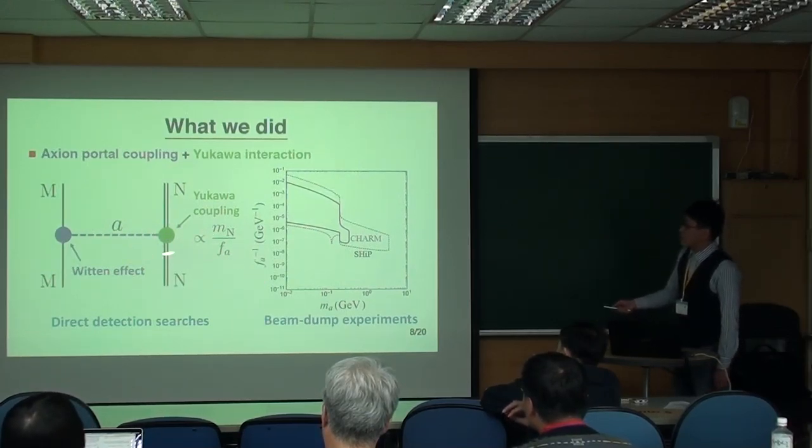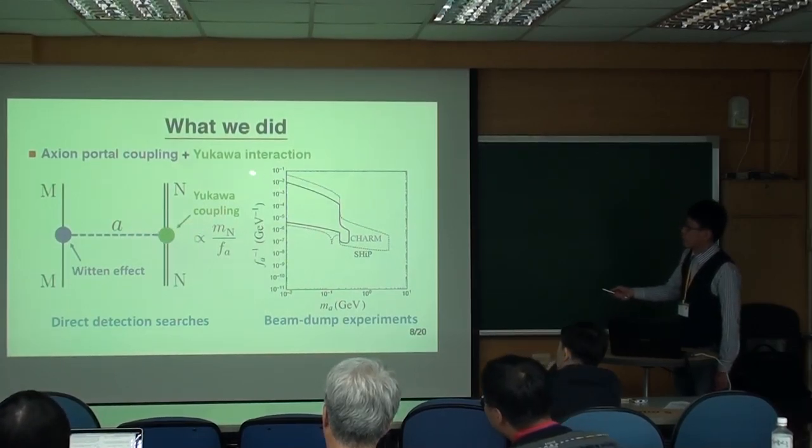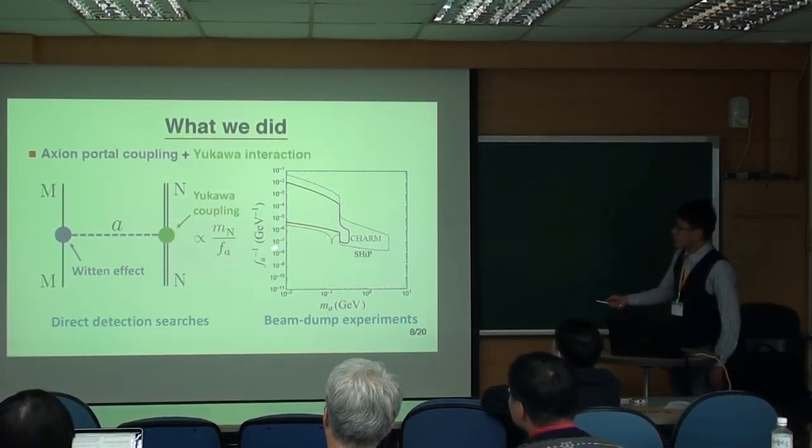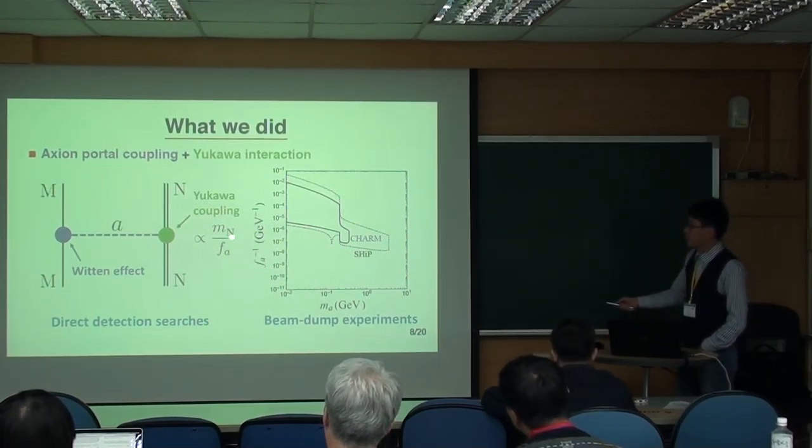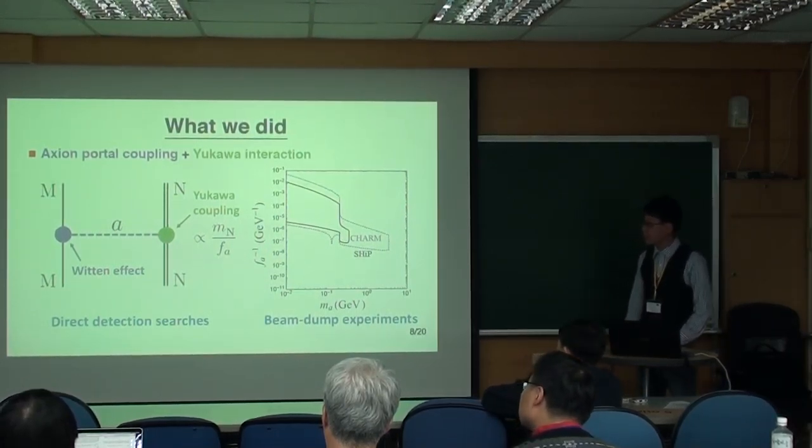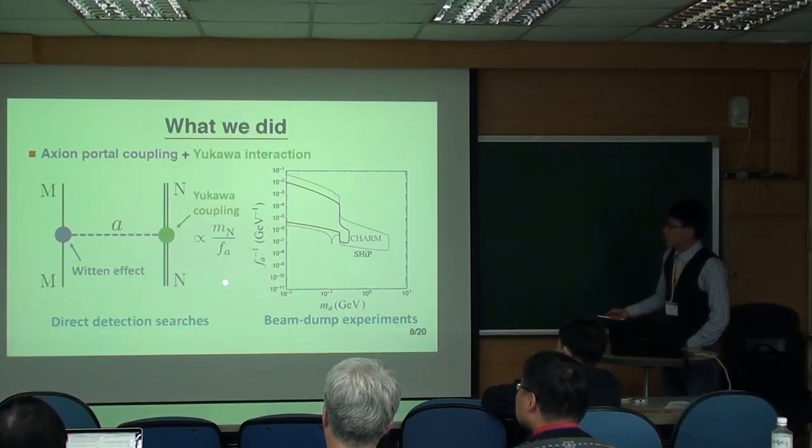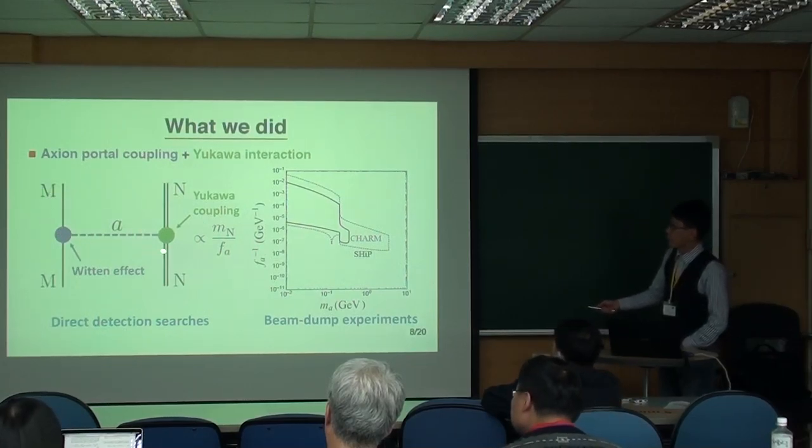The interaction of the axion with the monopole is not as easy. Basically, we just introduced the effective interaction. And the coupling is to the current which is associated with the U(1) global symmetry, the breaking of the U(1) global symmetry. So the difficult thing is that it's very difficult to write down the interaction vertex between the monopole and the axion.